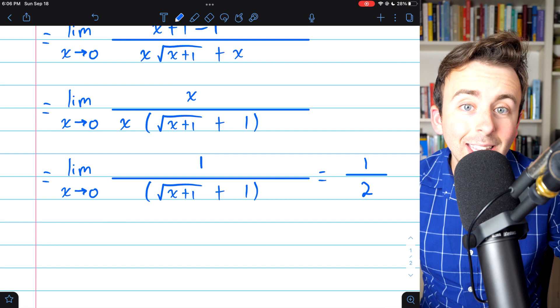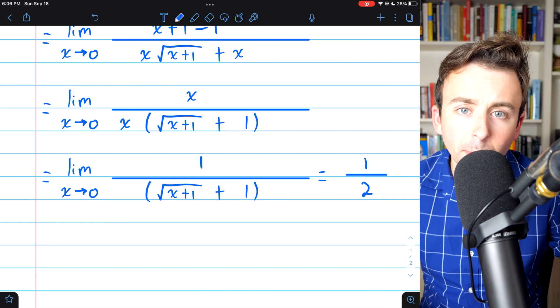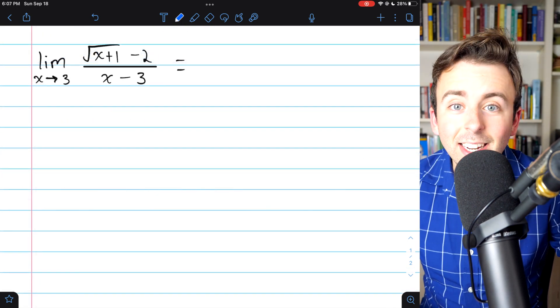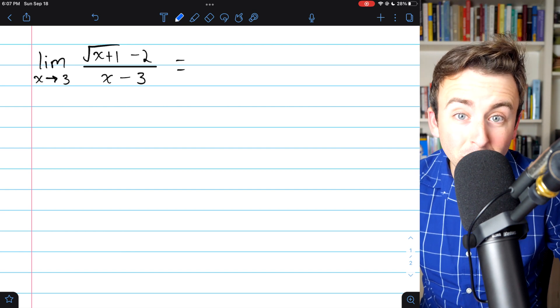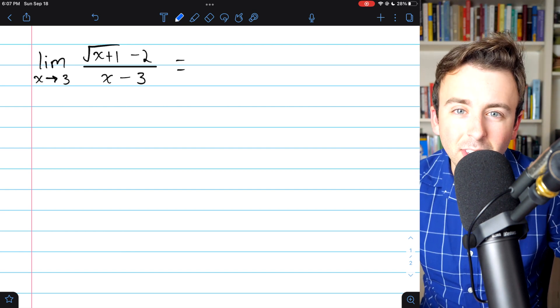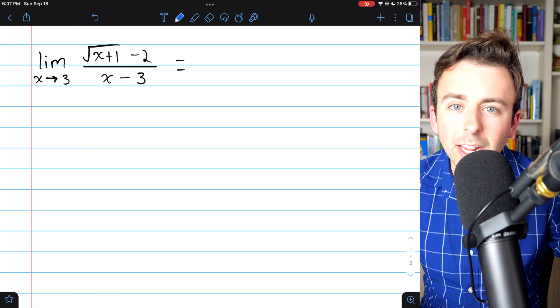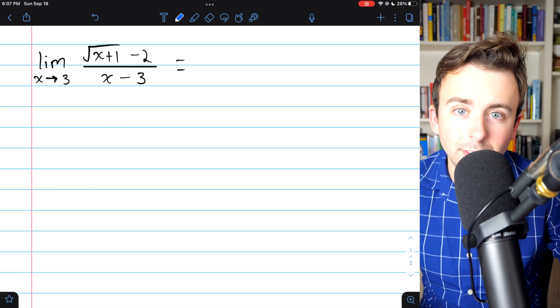And that's how we can evaluate a limit by rationalizing the numerator or denominator. Go ahead and give this second example a try yourself. It's a super similar idea. It's just that the factoring we have to do in the denominator is slightly harder to see, but it's very similar.